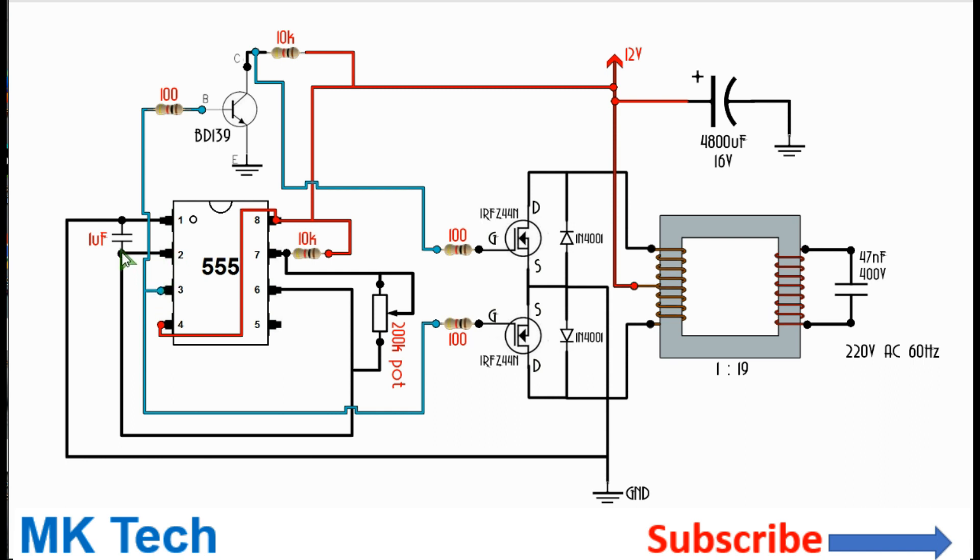The timing capacitor pin 2 is connected across the ground and pin 6. You also need a 10k ohm resistor across the VCC pin and the discharge pin 7 and a trimmer resistor across pin 7 and pin 6. This allows you to change the frequency as desired.